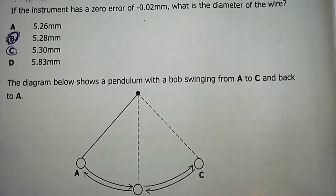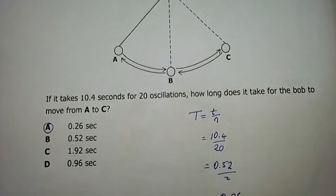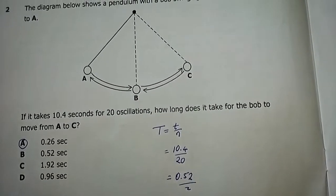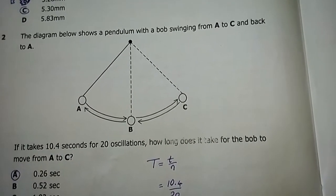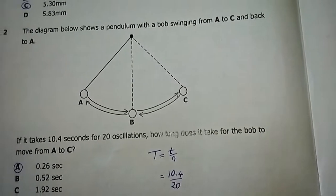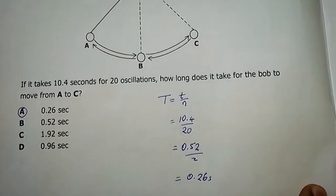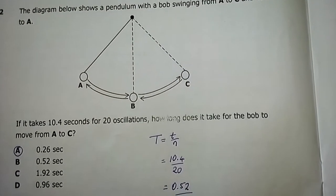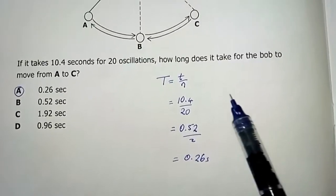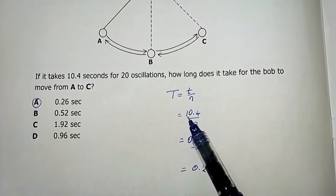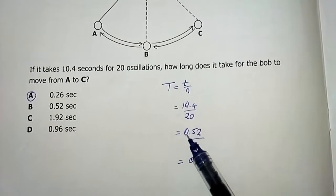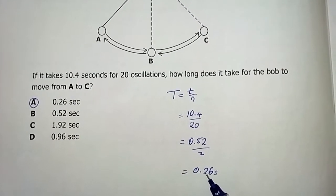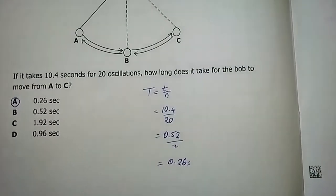Question 2: A pendulum bob swings from A to C and back. If it takes 10.4 seconds for 20 oscillations, how long does it take to swing from A to C? A to C is half a cycle, so we need half a period. Period T = time/oscillations = 10.4/20 = 0.52 seconds. Half of that is 0.26 seconds. Answer is A.